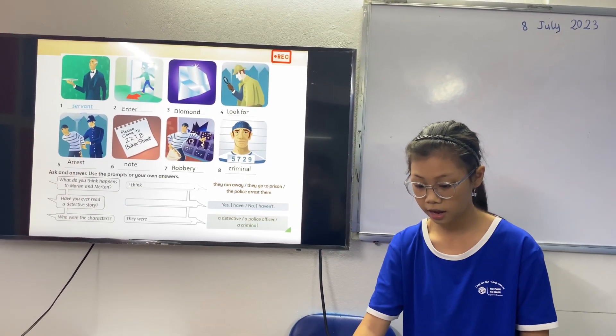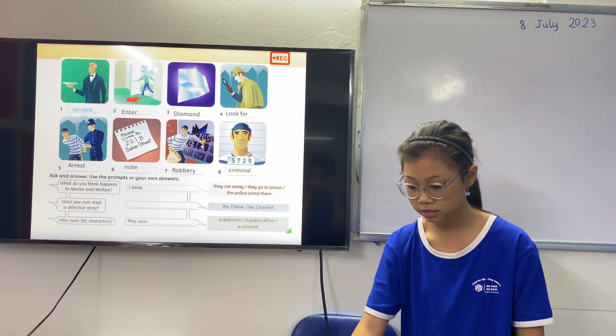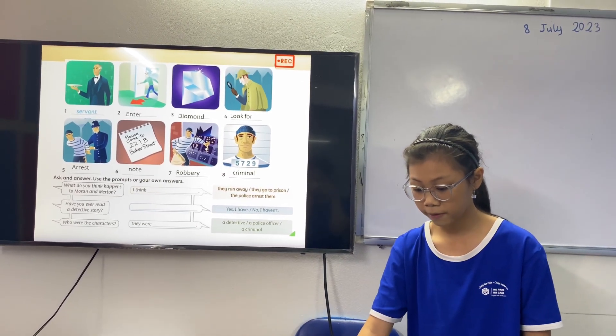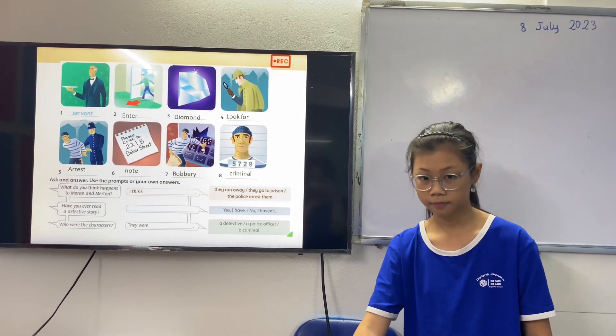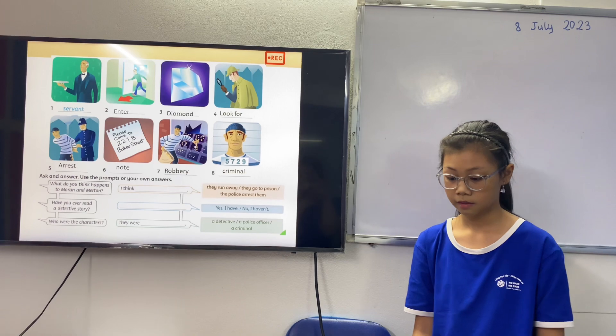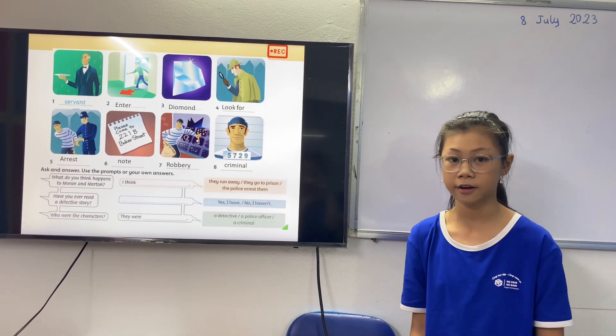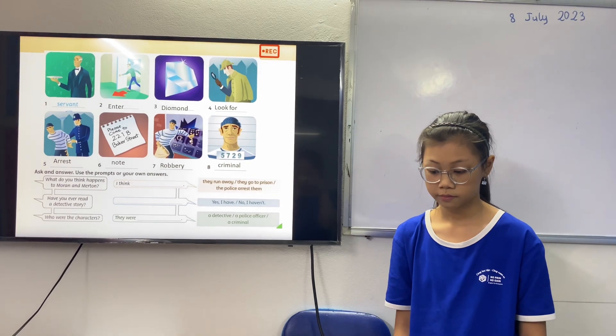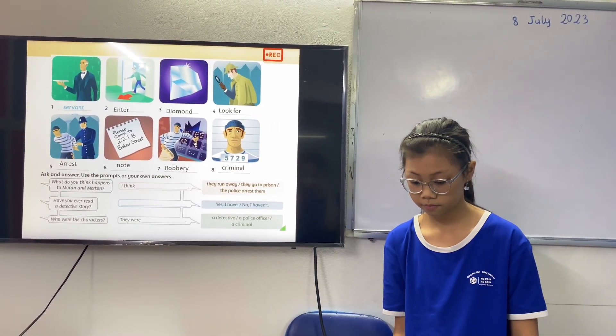Servant entered, diamond looked for a rat. Knows the property criminal. Do you think what happened to Moran and Matan? I think they ran away. Have you ever read a detective story? No, I haven't. Next one please.